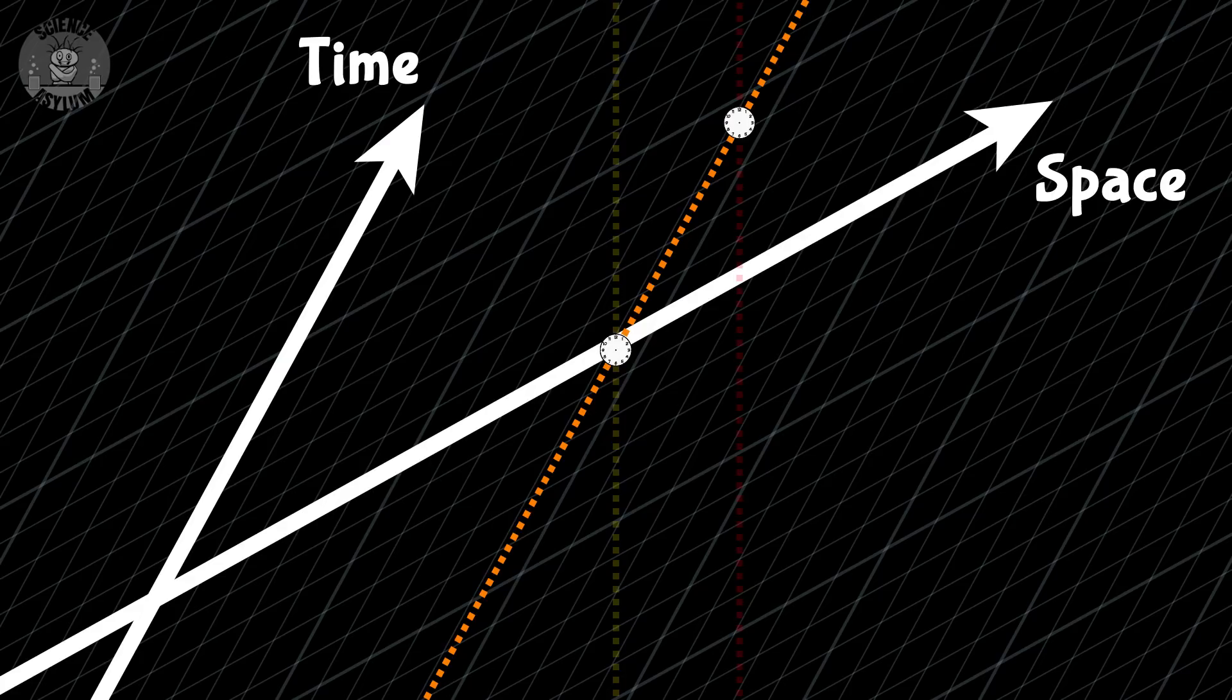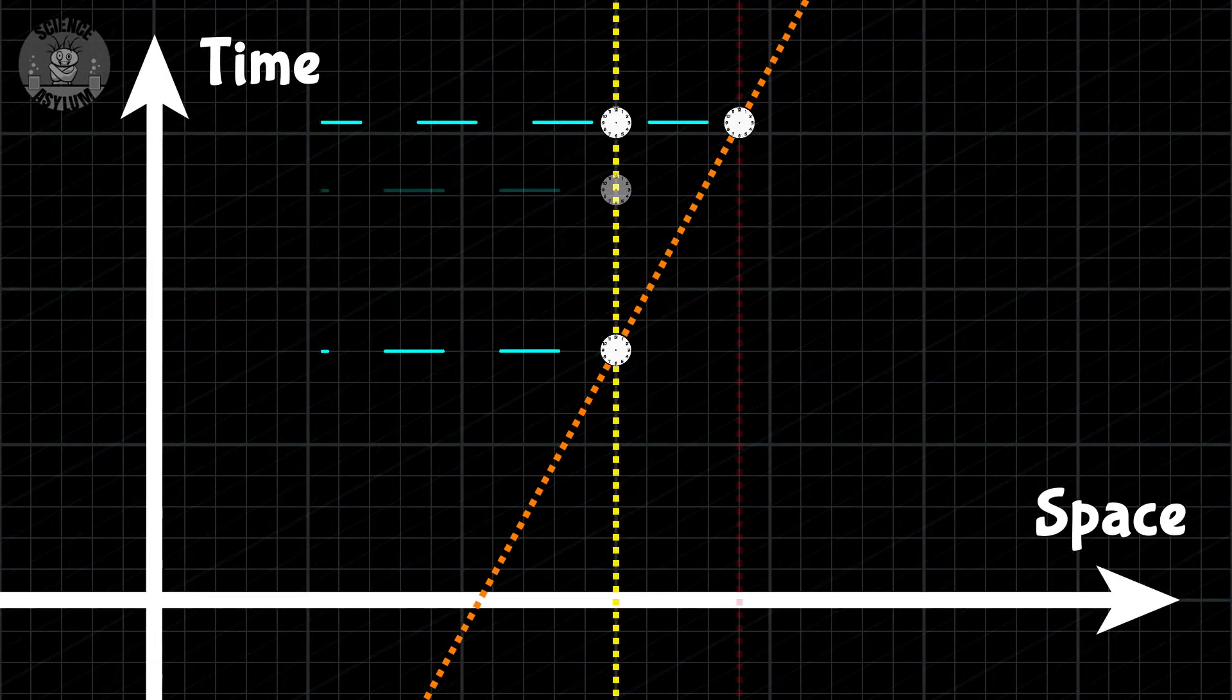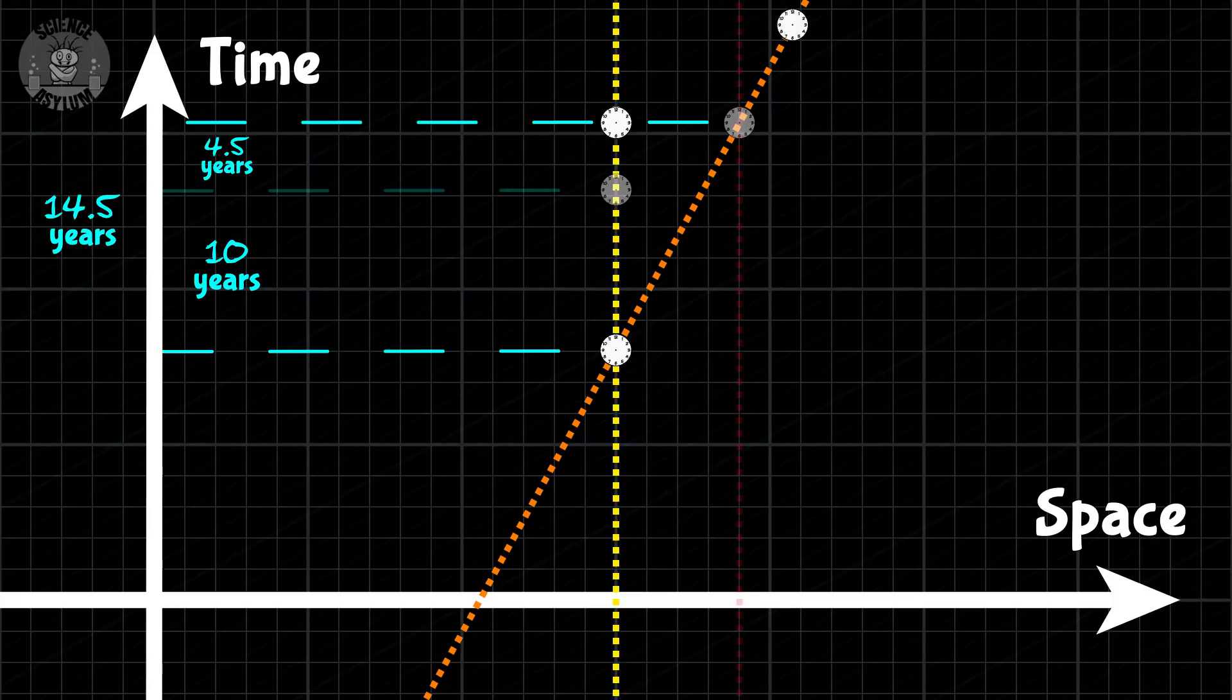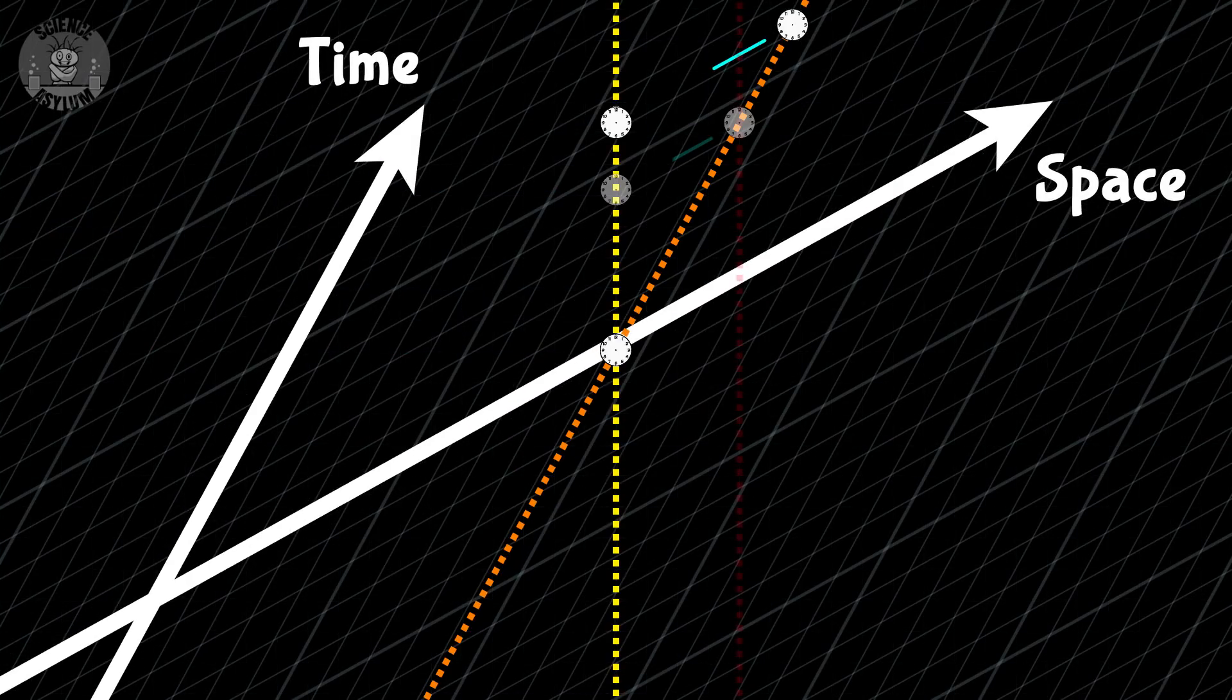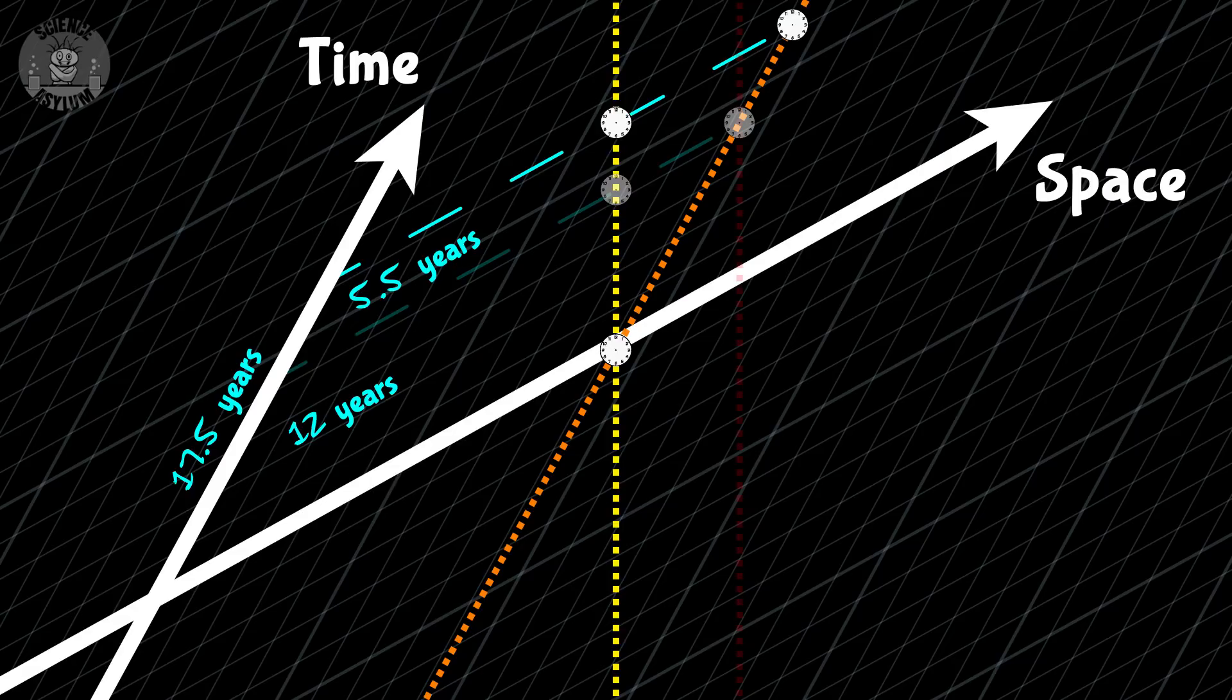The event of Rocket Clone passing Wolf 359 isn't on my path. It's on his. To line that up with the event at the end of my path, Rocket Clone has to wait over 5 more years, because my entire path is almost 17 and a half years tall in his coordinates.